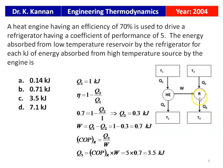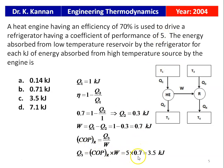The COP of the refrigerator = Q3/W, so Q3 = COP × W. COP is given as 5, so Q3 = 5 × 0.7 = 3.5 kJ. The correct option is 3.5 kJ.